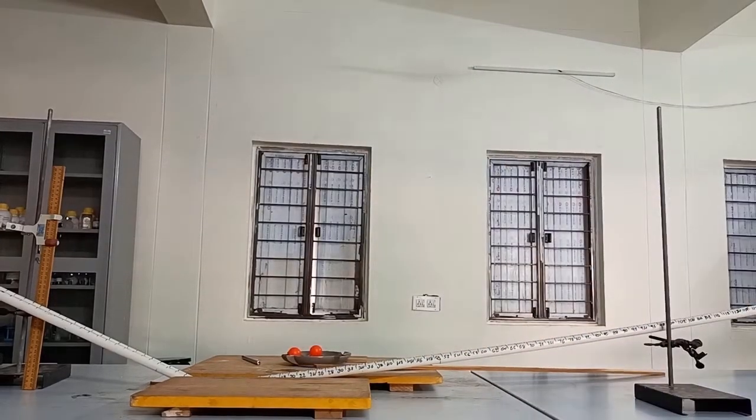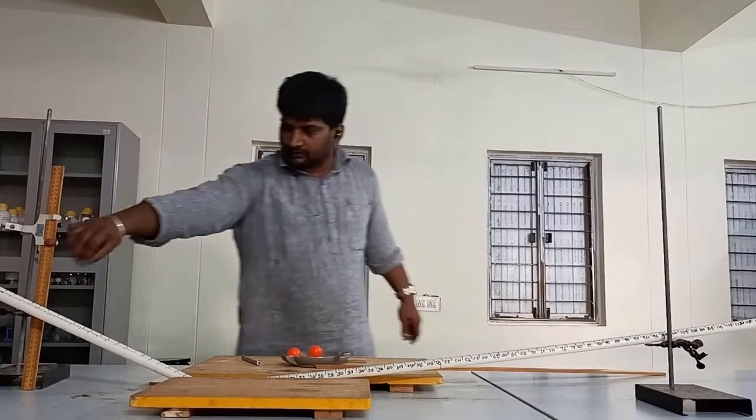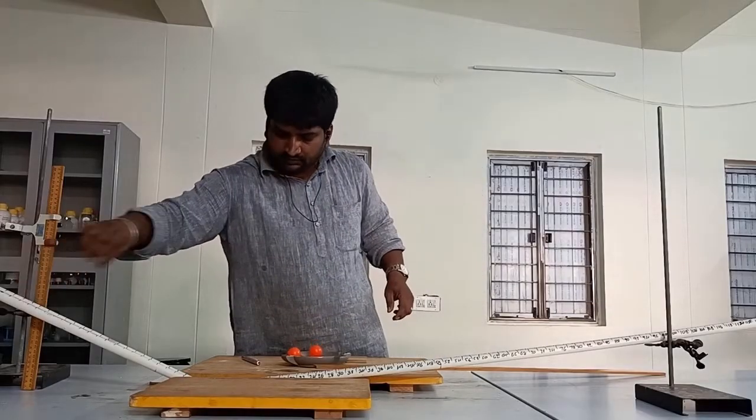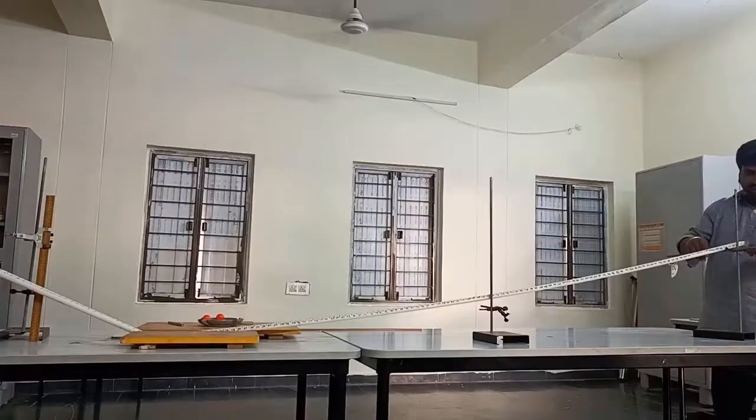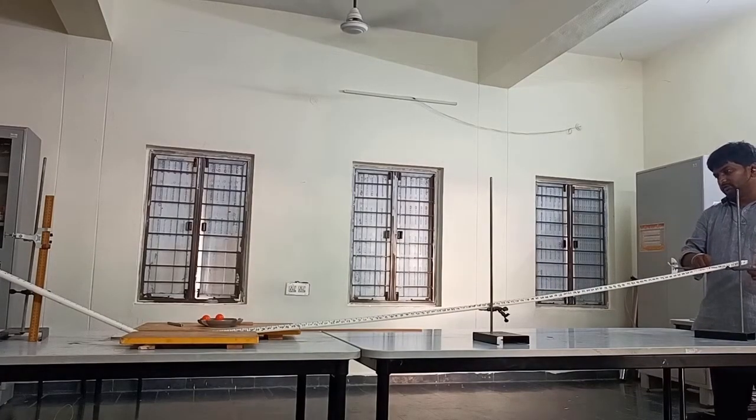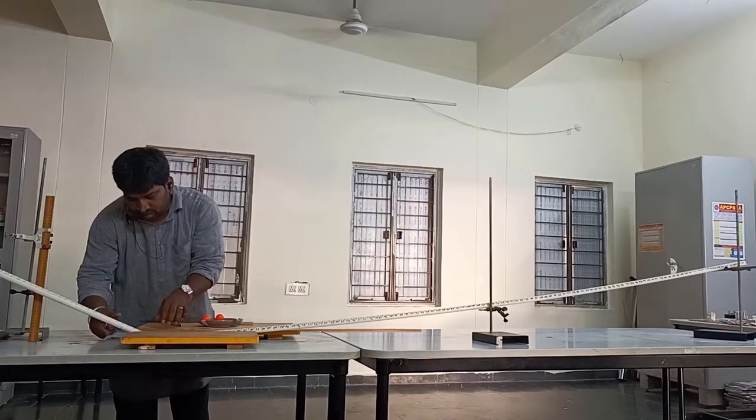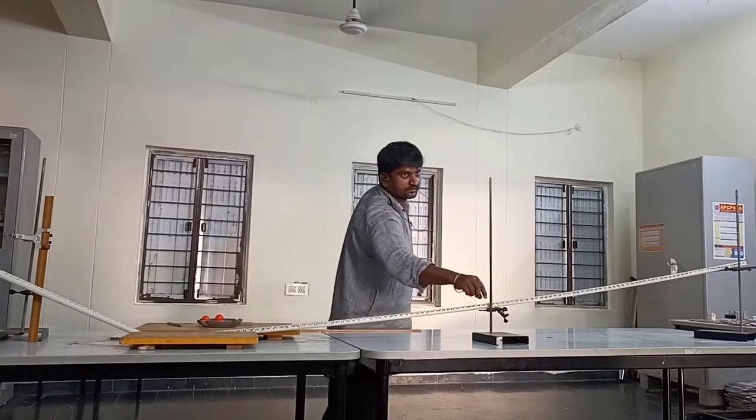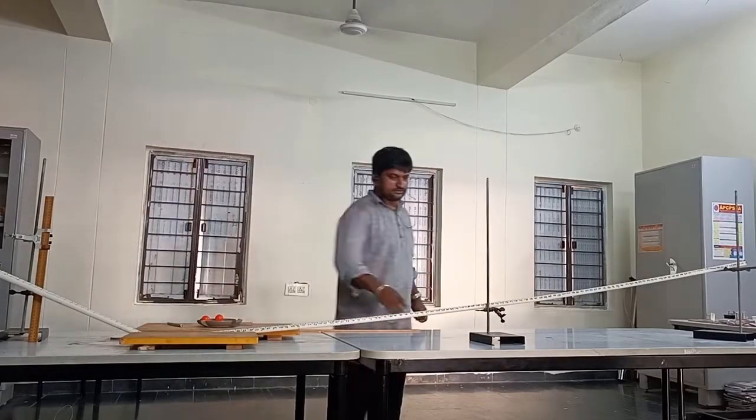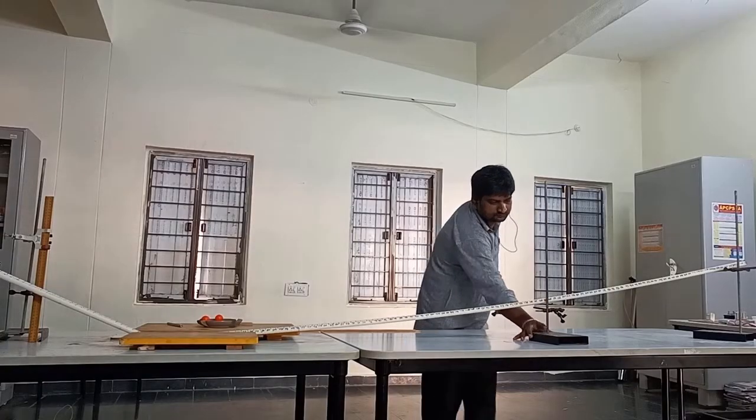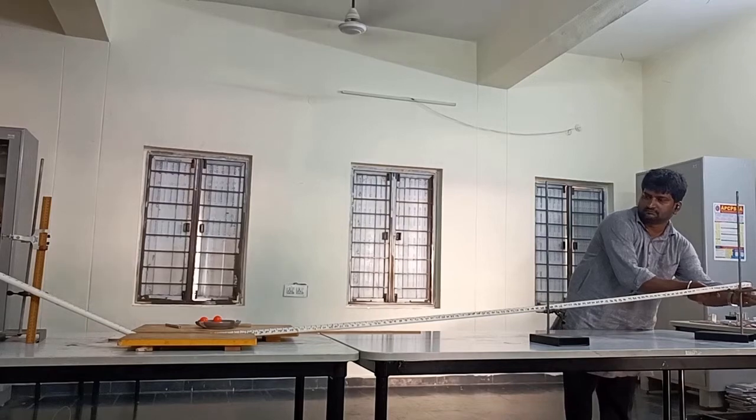If the angle of inclination is zero, according to Galileo's observation, the ball rolled down on the first inclined plane due to gravity and continues to reach the same height. In this process, the ball runs farther and farther, meaning the distance traveled is greater.